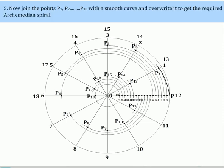Now, join the points P1, P2, P3, etc. up to P18 with a smooth curve and overwrite it to get the required Archimedean spiral.